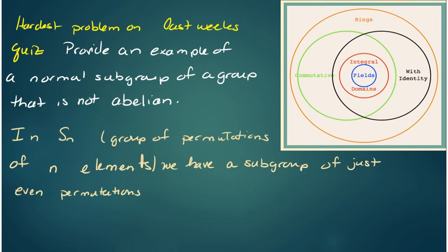So the problem was to provide an example of a normal subgroup of a group that that subgroup is not abelian. So normal but not abelian. So in S_N we have the group of permutations of N elements and we have a subgroup of just even permutations.